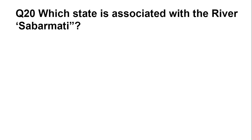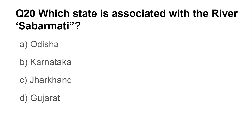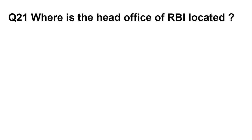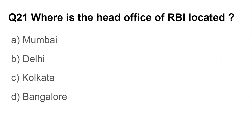Question number twenty: Which state is associated with the river Sabarmati? Options are: Odisha, Karnataka, Jharkhand, and Gujarat. The answer is Gujarat. Question number twenty-one: Where is the head office of RBI (Reserve Bank of India) located? Options are: Mumbai, Delhi, Kolkata, and Bangalore. The answer is Mumbai.